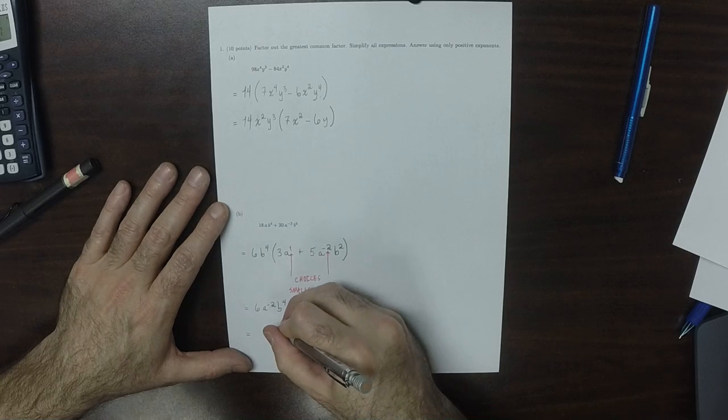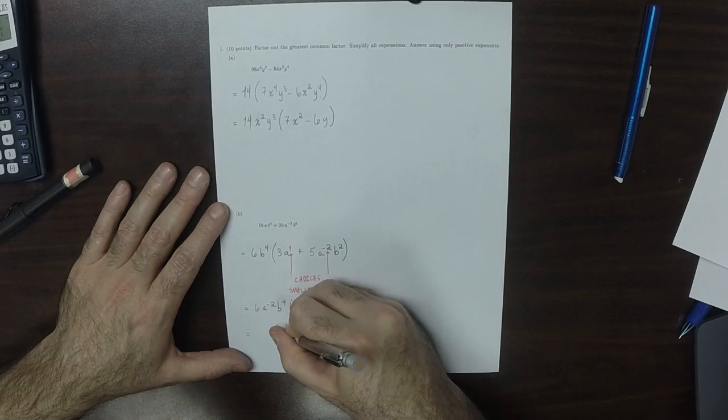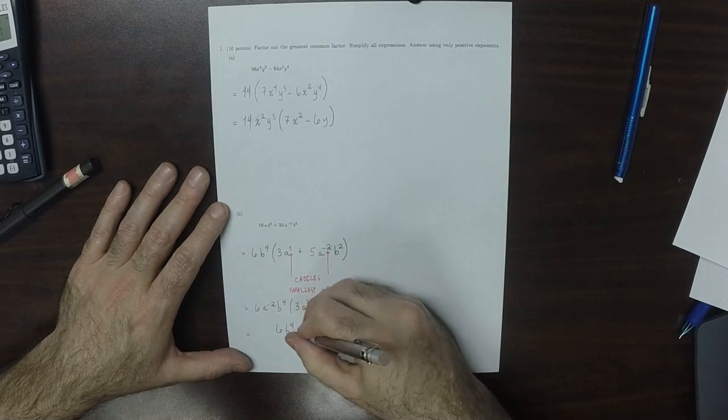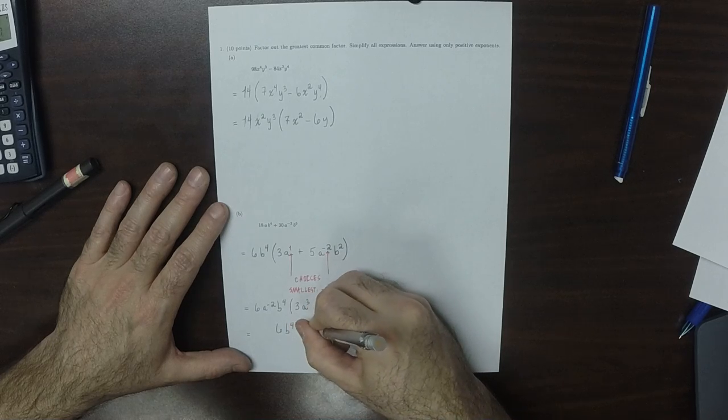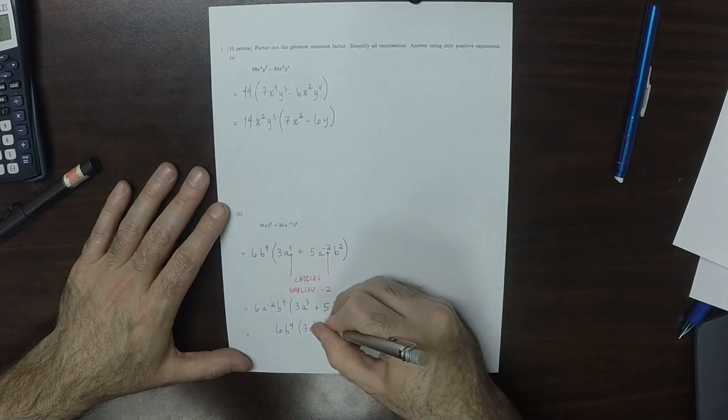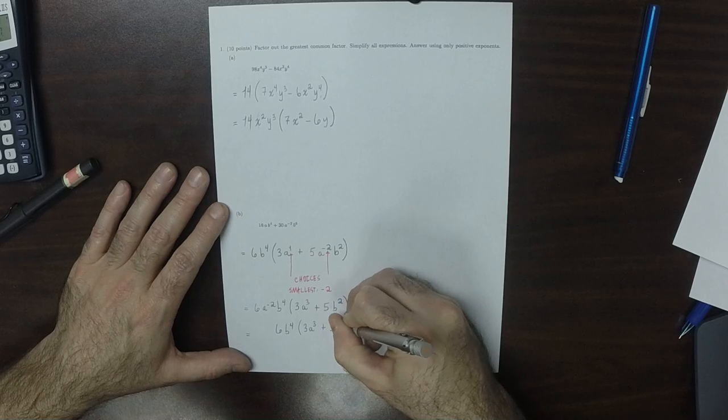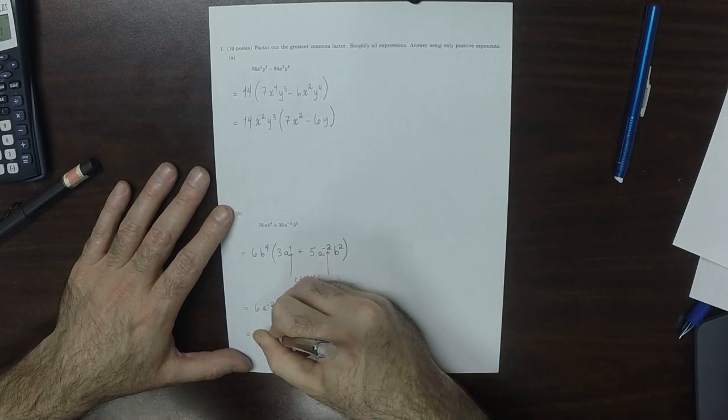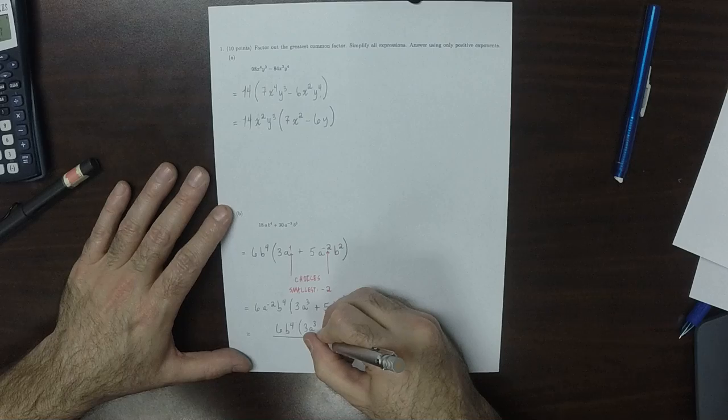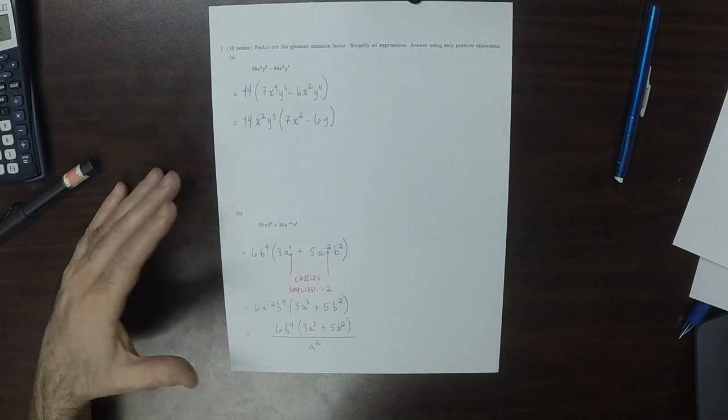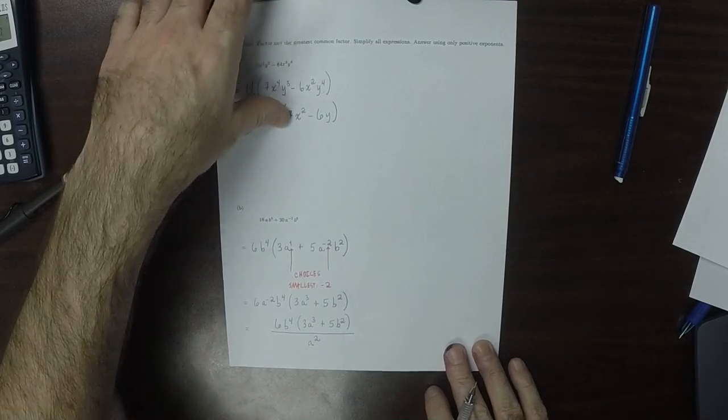So to use only positive exponents, this would be 6b to the 4, 3a cubed plus 5b squared over a squared. So that's part 1, Question 1.